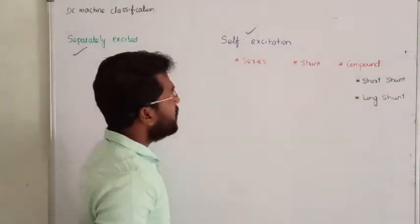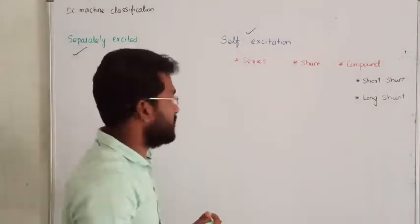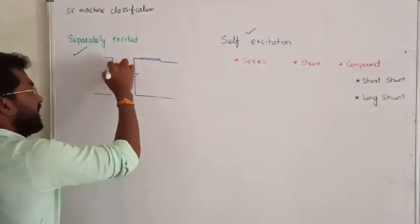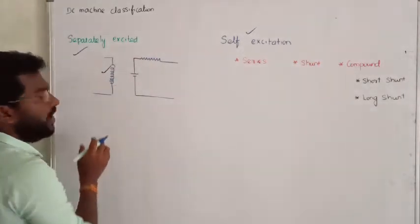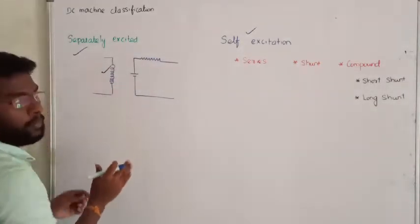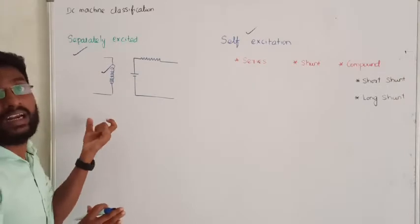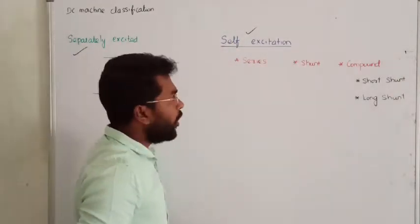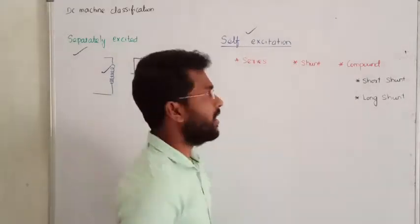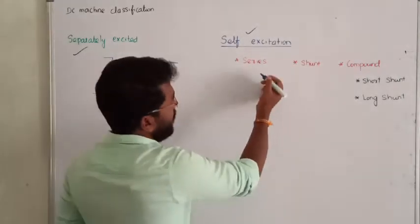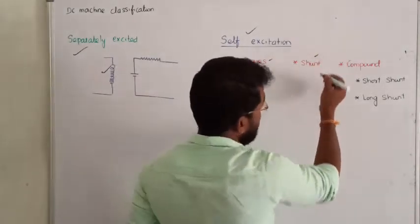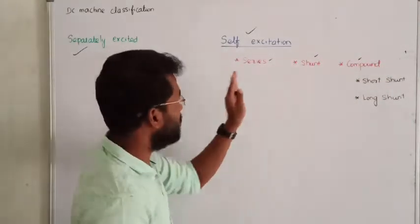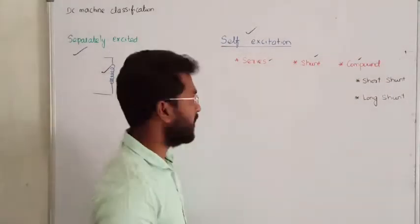Under self-excitation, the excited field flux will not be given by an external DC battery. Instead, we are going to have a variety of classifications. Under self-excitation, the first one is called series, the second one is called shunt, and the third one is called compound. Let us see the difference between these three categories one by one.